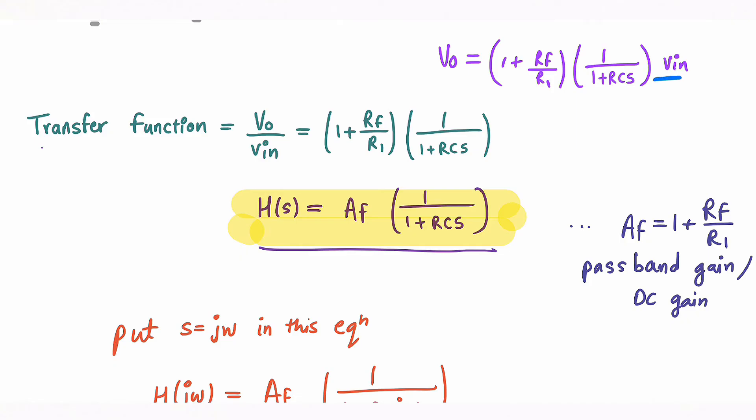Now I have sent this Vin term to left hand side and we got our transfer function Vo upon Vin, output upon input. Now I am just calling this term Af. Af is my passband gain of op amp. You can call it DC gain. In some textbooks you will see term HoLP. So HoLP and Af is same thing, passband gain of op amp. Now I just replace this by Af so you got your transfer function.